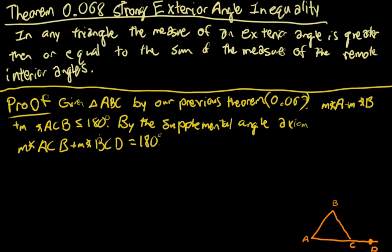Both expressions relate to 180. One equals 180, one is less than or equal to 180. So measure of angle A plus measure of angle B plus measure of angle ACB is less than or equal to 180, which equals measure of angle ACB plus measure of angle BCD.